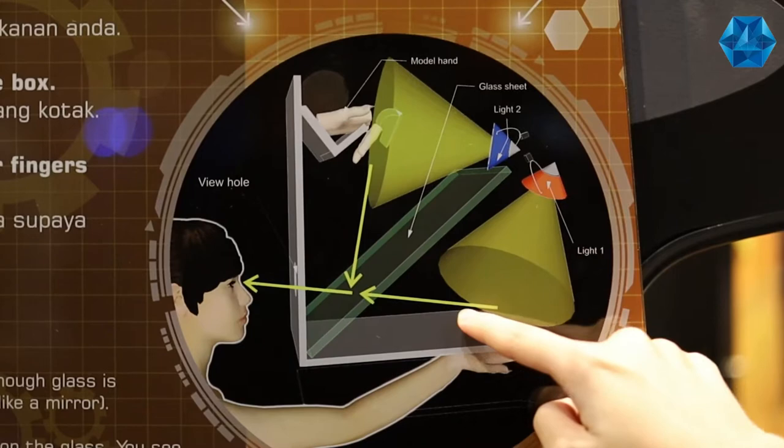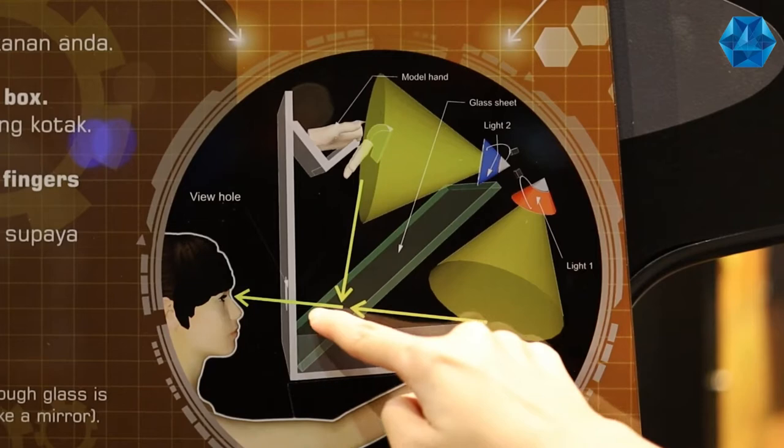You'll see this ghostly reflection and your fingers behind the glass in the same place, the direction that the light from both objects reaches your eyes.